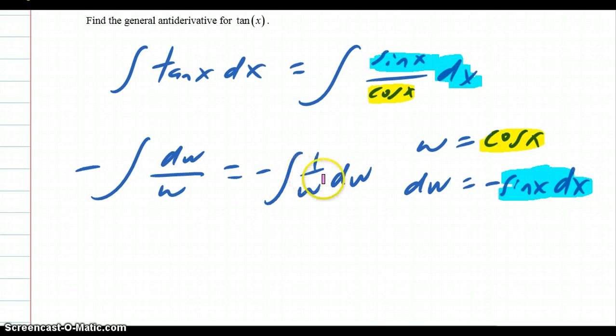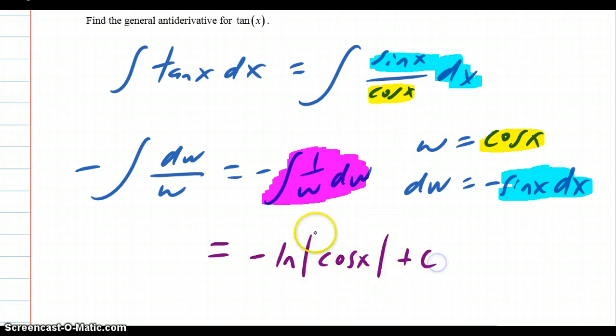And some people kind of freak out when they see that. So they make it 1 over w dw. Because my guess is everybody knows what this is, right? What's the anti-derivative of that? It's going to be negative natural log cosine x. Okay, so cosine x is your w, right? In absolute value plus c. Now that is your answer.